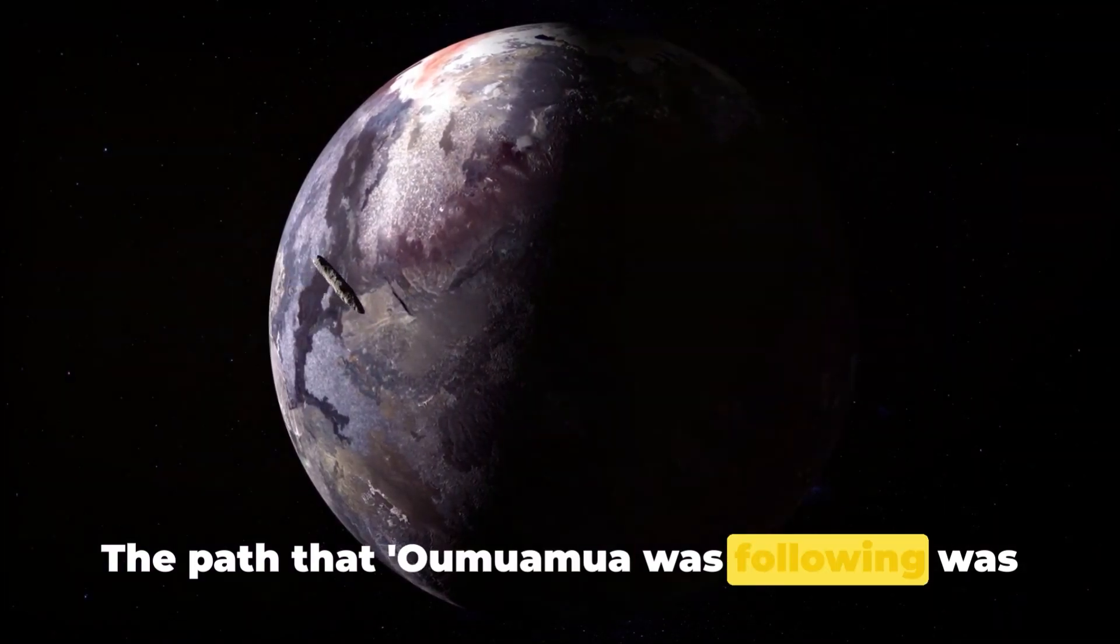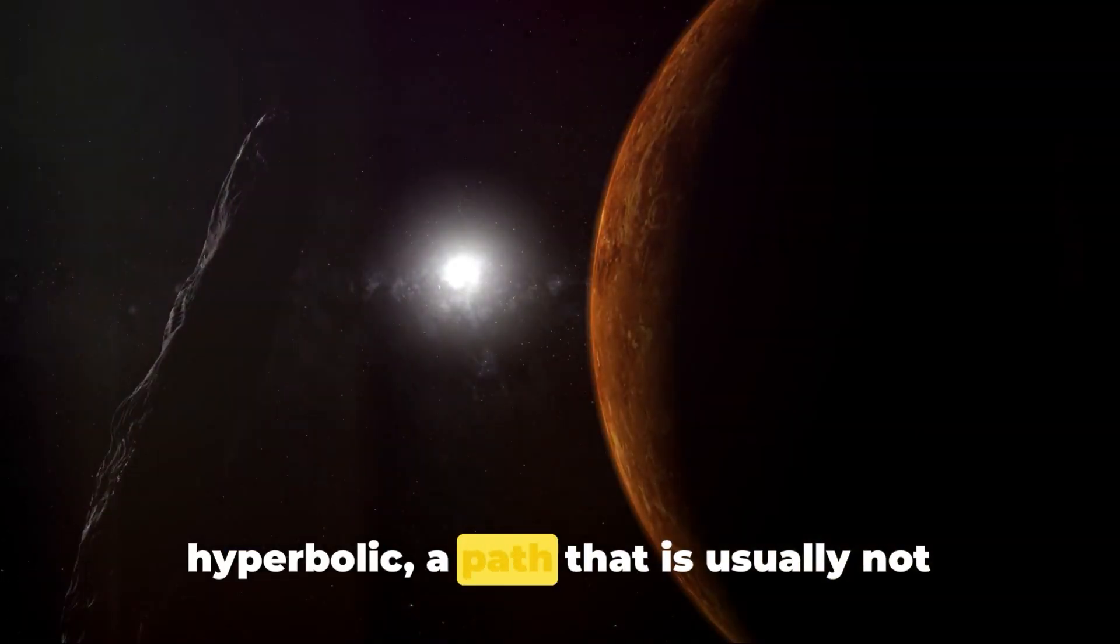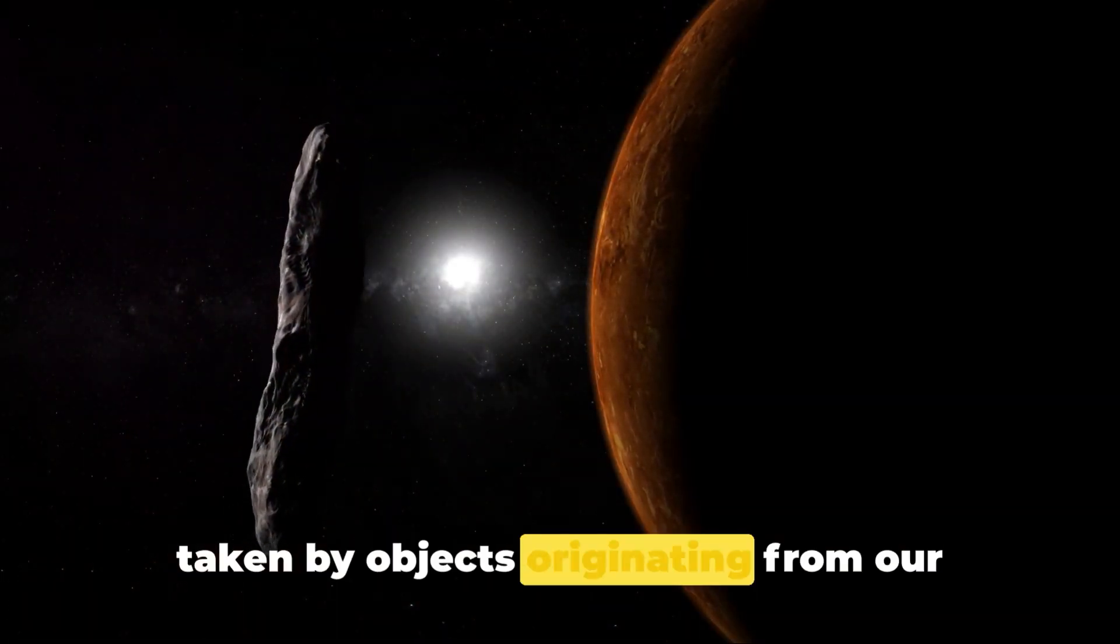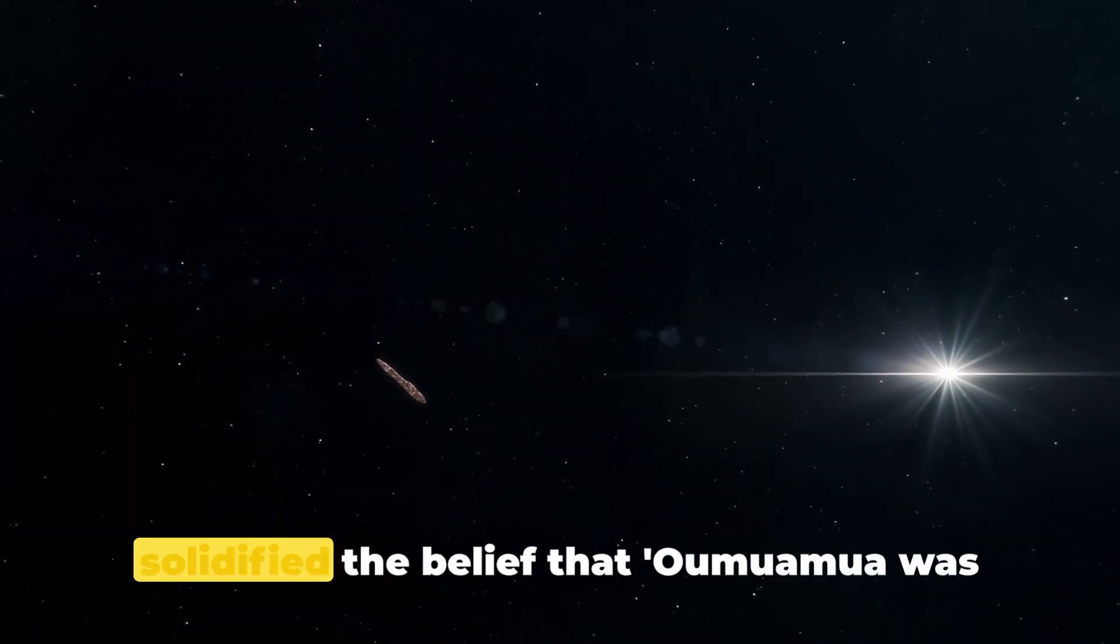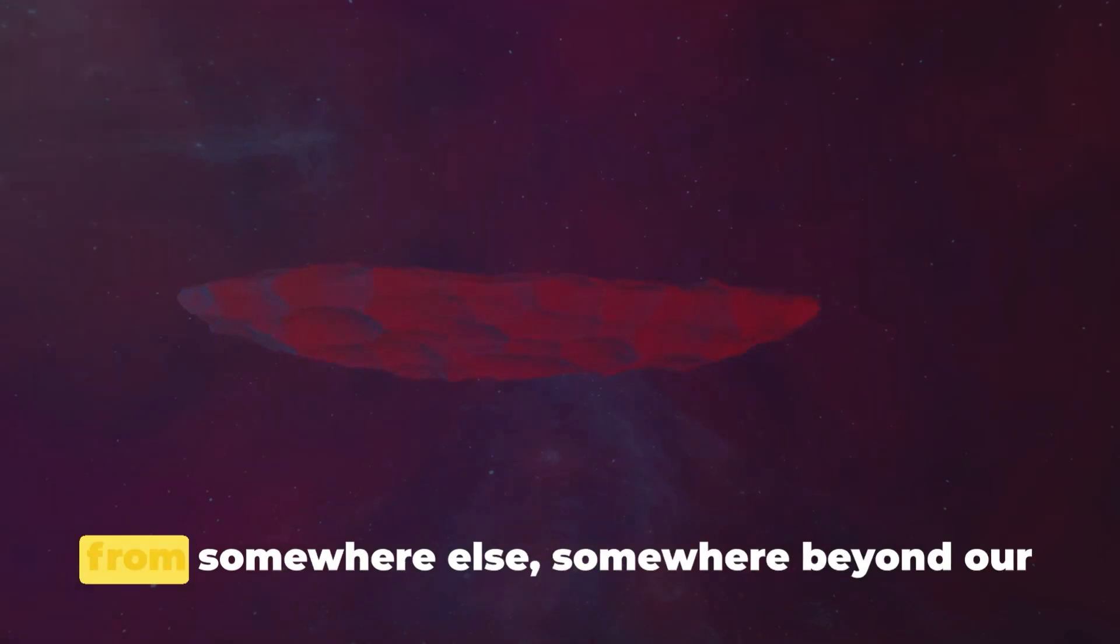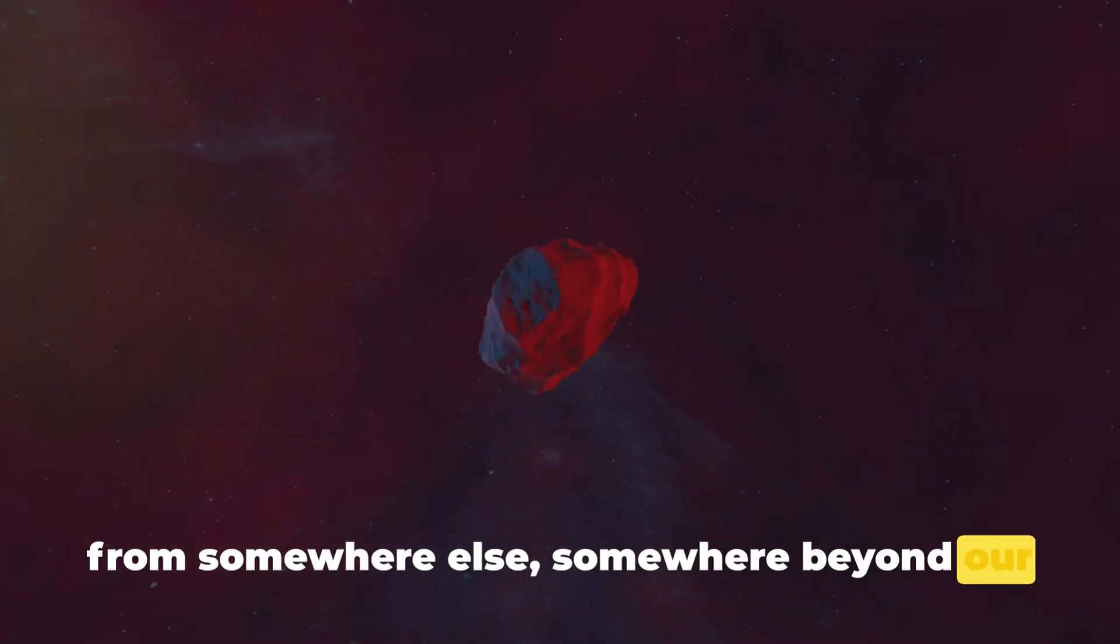The path that Oumuamua was following was hyperbolic, a path that is usually not taken by objects originating from our solar system. This unusual trajectory further solidified the belief that Oumuamua was from somewhere else, somewhere beyond our solar system.